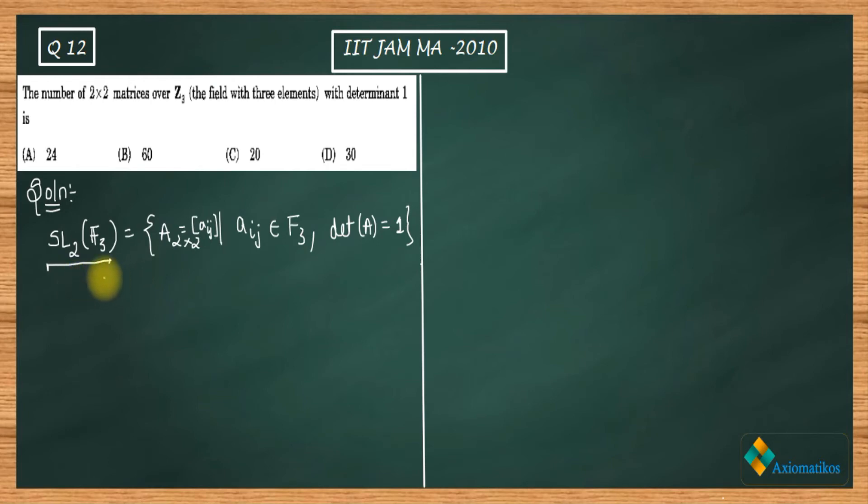Now I will define the general linear group. General linear group is defined like this: it consists of—I have written n here, that's why I am taking n×n matrices. It consists of n×n matrices with the property that...